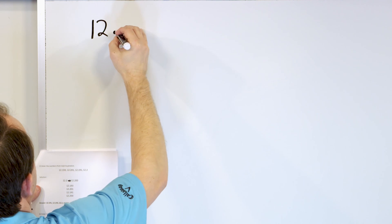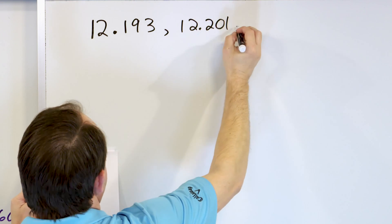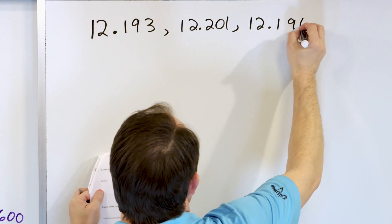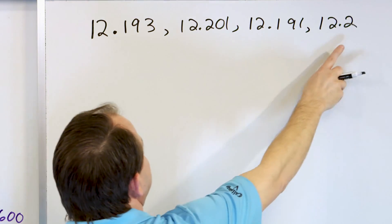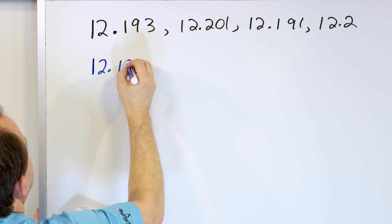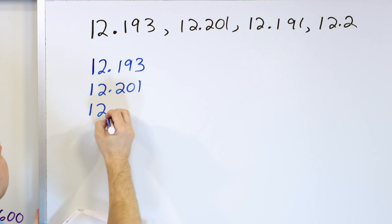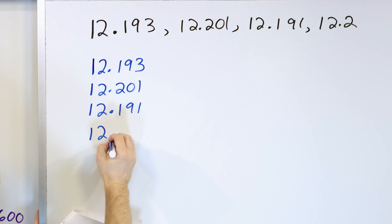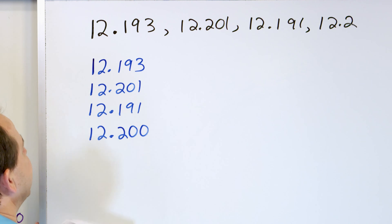Next, let's take a look at these numbers: 12.193, 12.201, 12.191, and 12.2. All of these have three digits after the decimal except 12.2. So we stack them up: 12.193, 12.201, 12.191, and 12.2 — but we drop a zero, or even two zeros, to make them all match the number of decimal places.